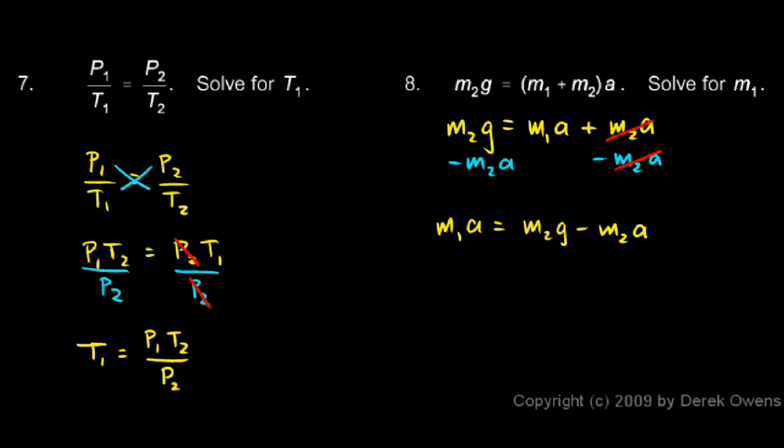And then to solve for M1, I just have to divide by A. So dividing by A on both sides leaves me with M1 on the left. And it leaves me with M2G minus M2A over A on the right.